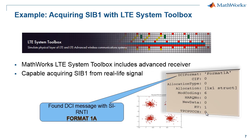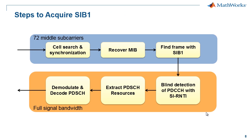We will now demonstrate how to acquire SIB1 from a real-life signal with LTE System Toolbox. Doing so requires a powerful receiver that is able to demodulate most LTE channels, and LTE System Toolbox includes such capabilities. We will perform cell search and frame synchronization, demodulate and decode MIB, determine the frame and subframe that includes SIB1. We will do so on the middle six resource blocks of the signal, then use the whole bandwidth to perform blind search of PDCCH space with SI-RNTI, extract associated PDCCH resources, and demodulate and decode the PDCCH.